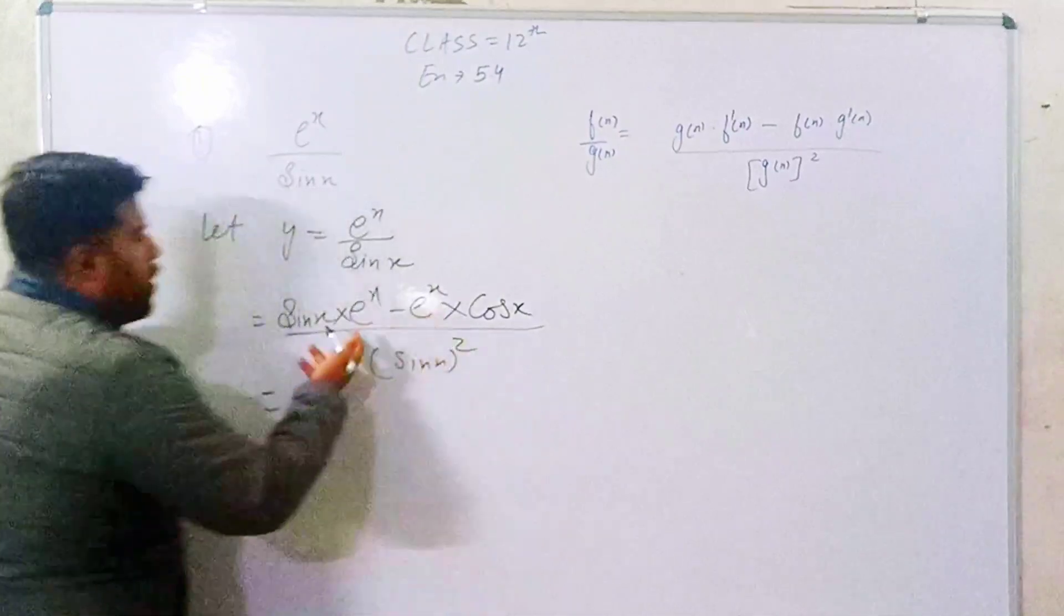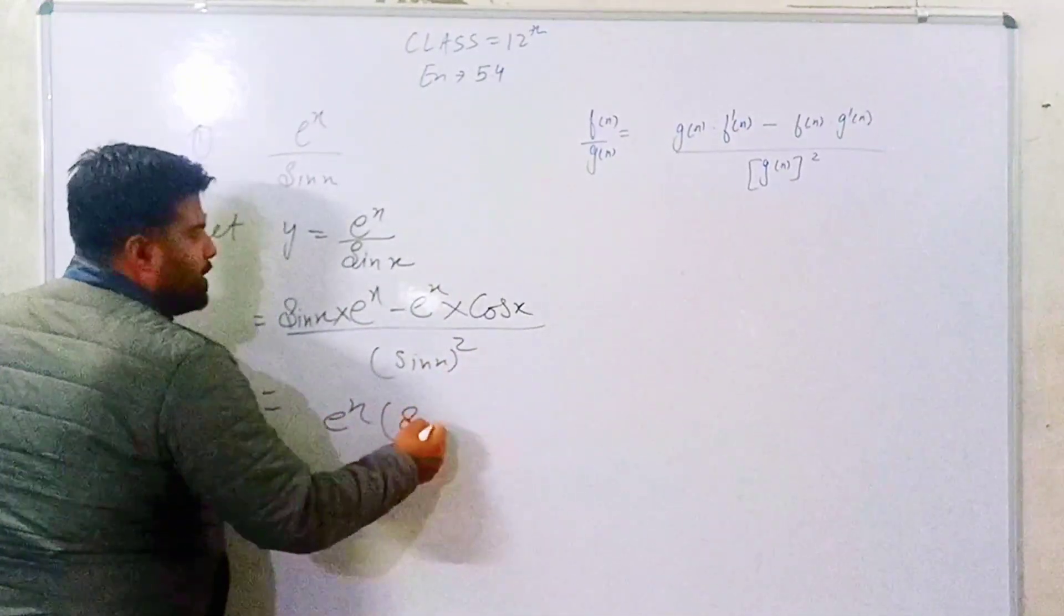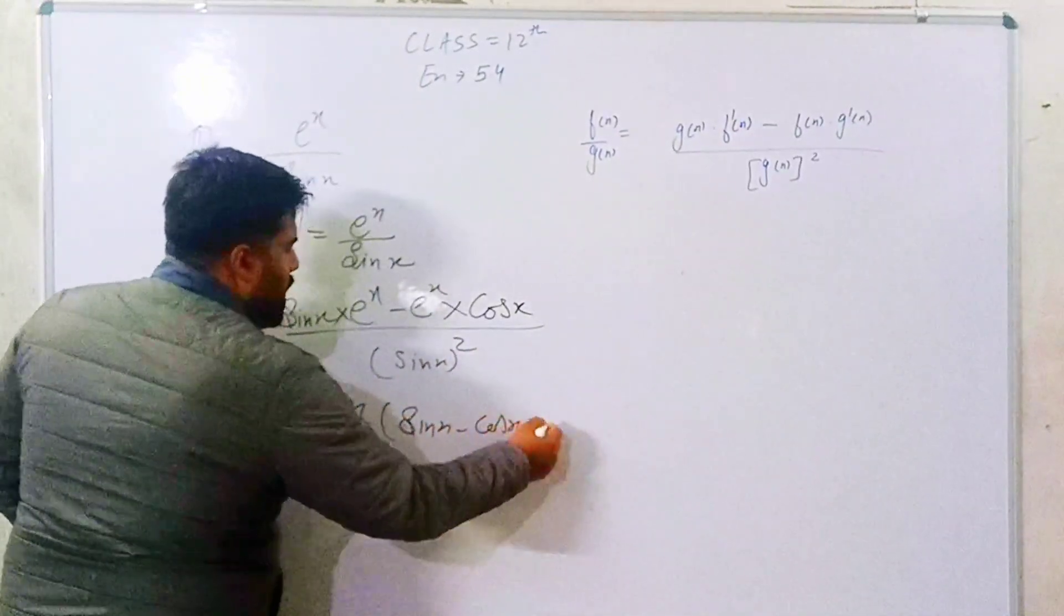Now, what will happen to us? Take ex common. Then what will happen to us? Sine X minus cos X.